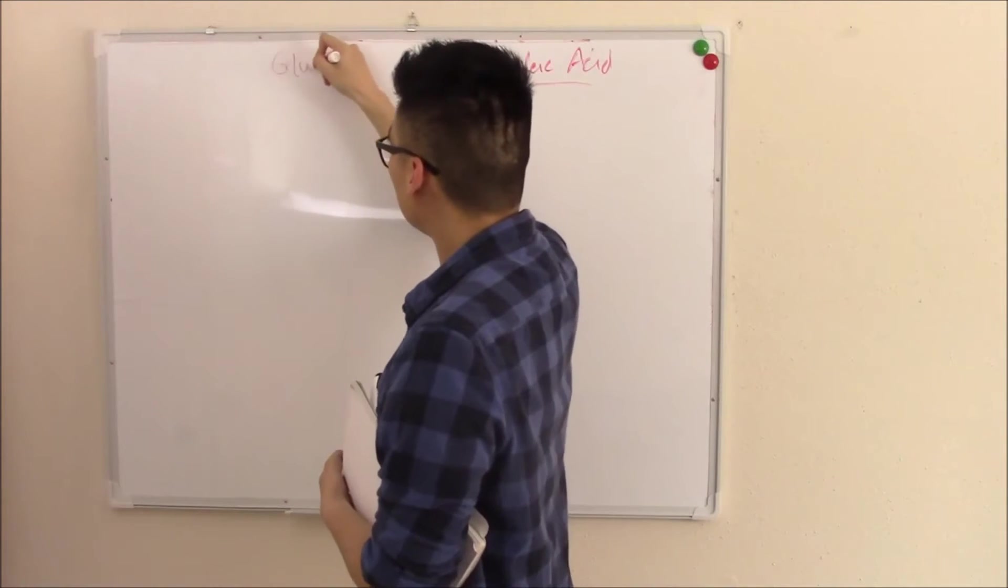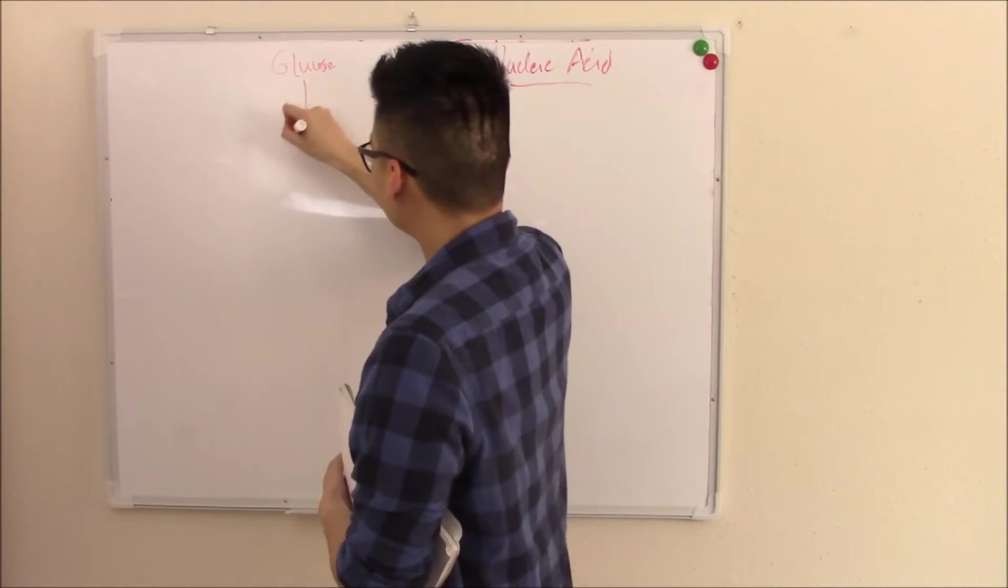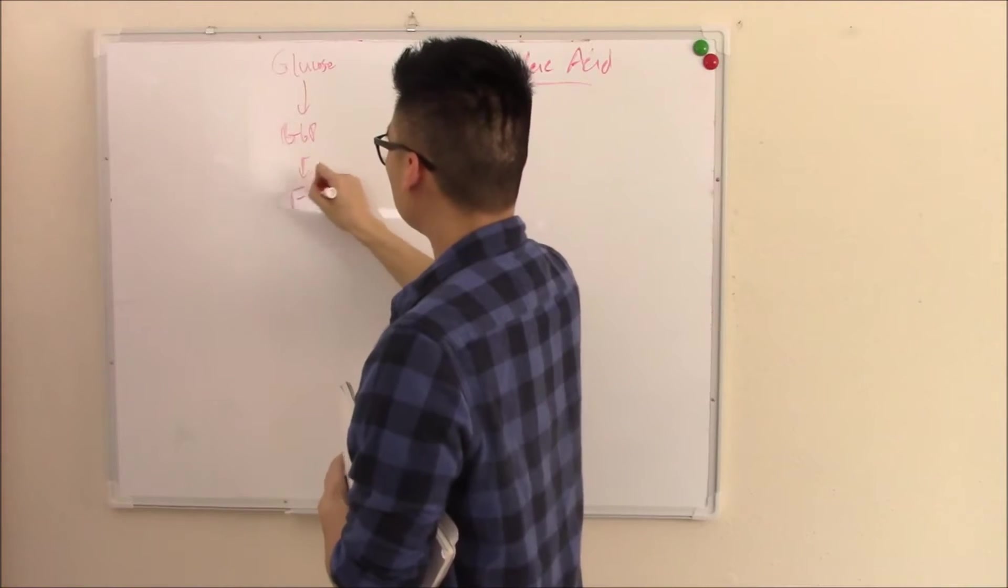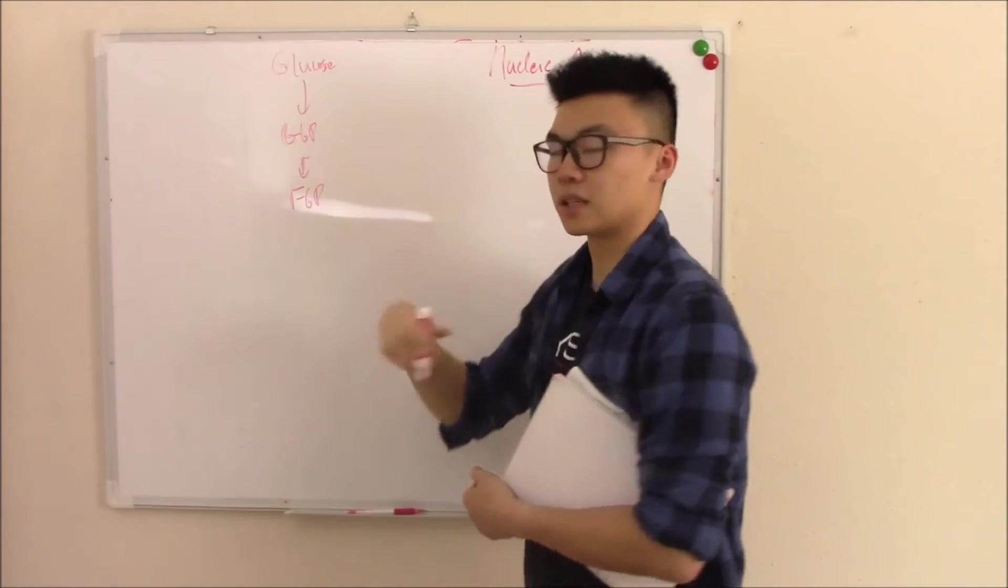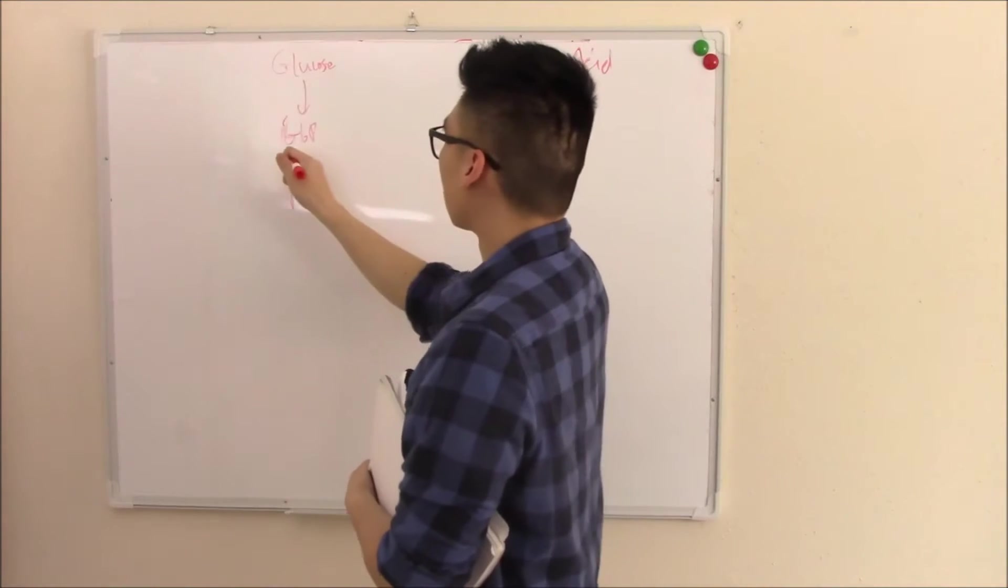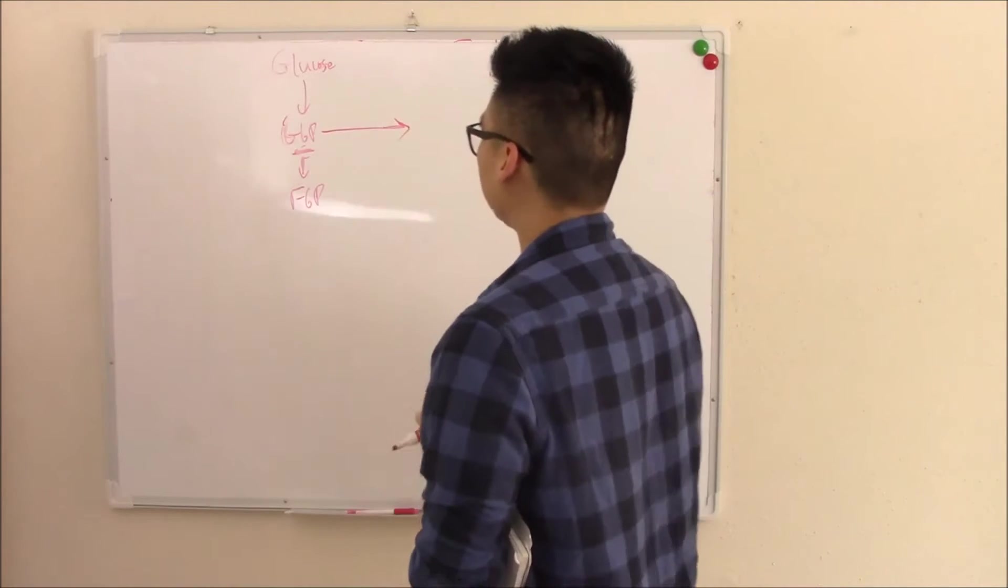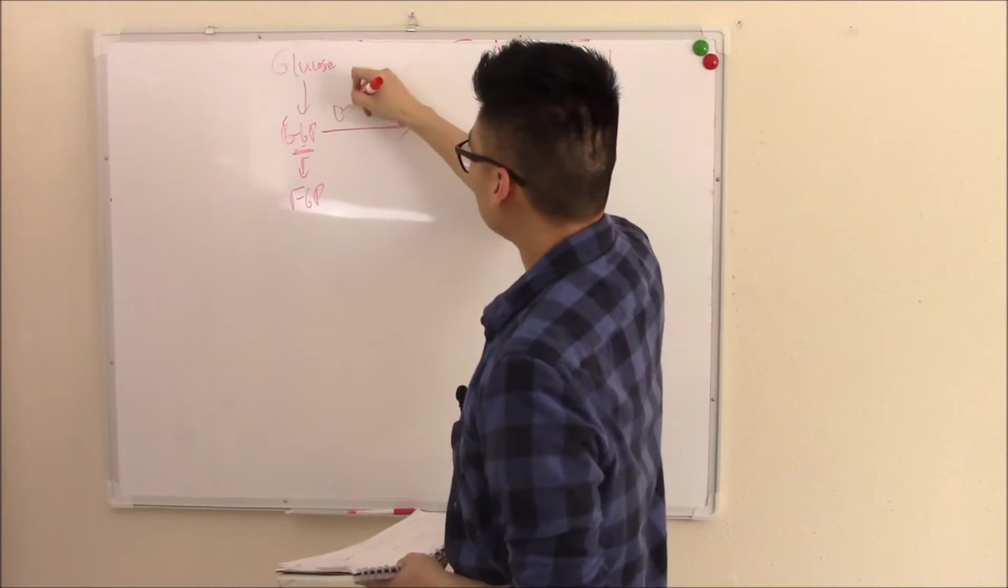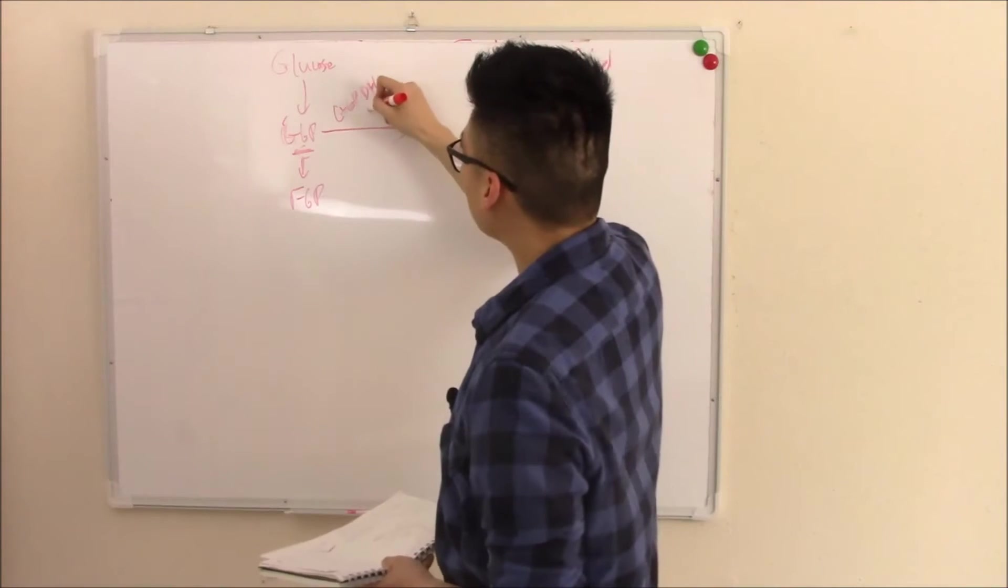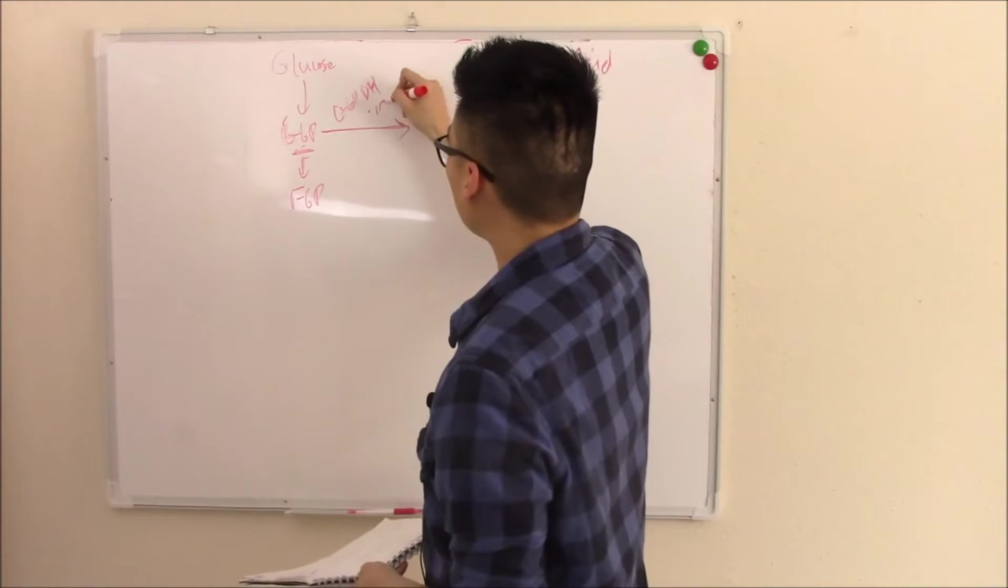So glucose turns into glucose 6-phosphate, which turns into fructose 6-phosphate, then on and on. But we'll stop right here, because this is where it fits in. The HMP shunt starts with glucose 6-phosphate. And it goes into a side reaction. Glucose 6-phosphate dehydrogenase is the enzyme that works on it.